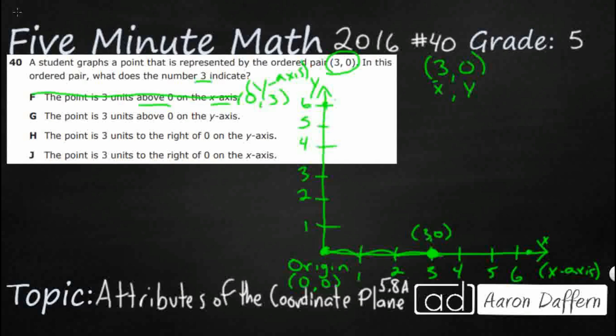G. The point is 3 units above 0 on the y-axis. Well, that's got the axes all mixed up. So, that's incorrect. H. The point is 3 units to the right of 0 on the y-axis. No, we are on our x-axis. So, our answer is J.